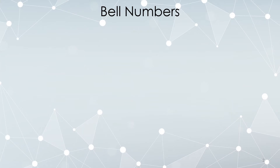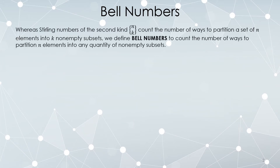As we continue to learn new types of counting tricks, the next thing we're going to discuss are called Bell numbers. Stirling numbers of the second kind counted the number of ways to partition a set of n elements into k non-empty subsets. Bell numbers simply count the number of ways to partition n elements into any quantity of non-empty subsets. We're going to denote these as b sub n — the number of ways to partition n elements regardless of how many subsets you use.